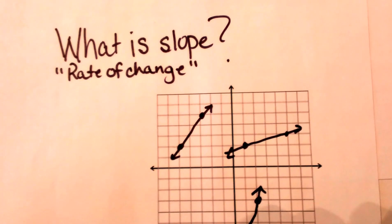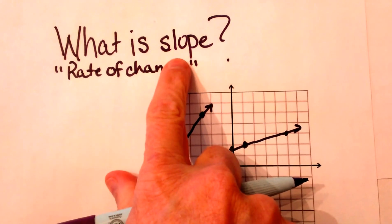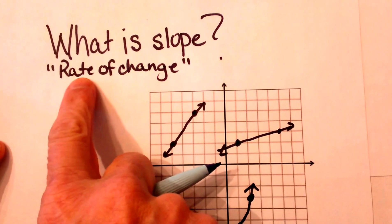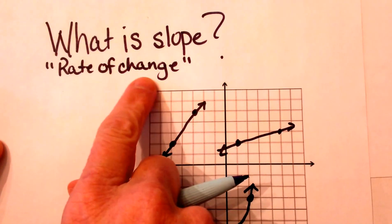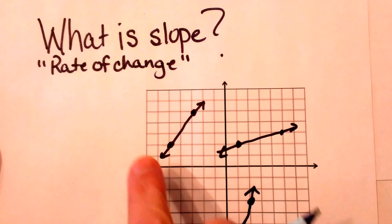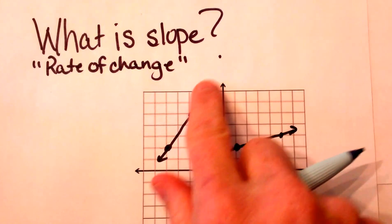We're going to look at what is slope today. The word slope is also somewhat interchangeable with the concept of rate of change, but rate of change is associated more with a curve and slope is associated more with a line.